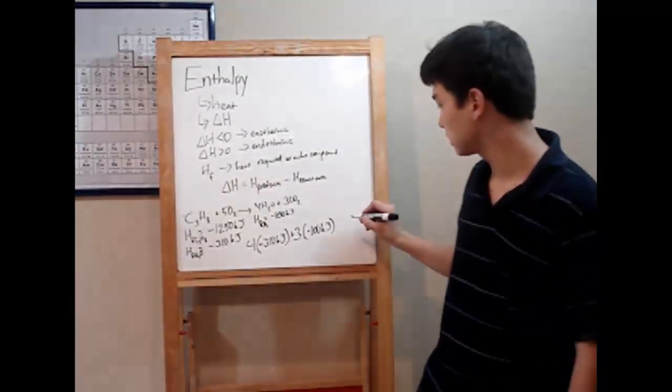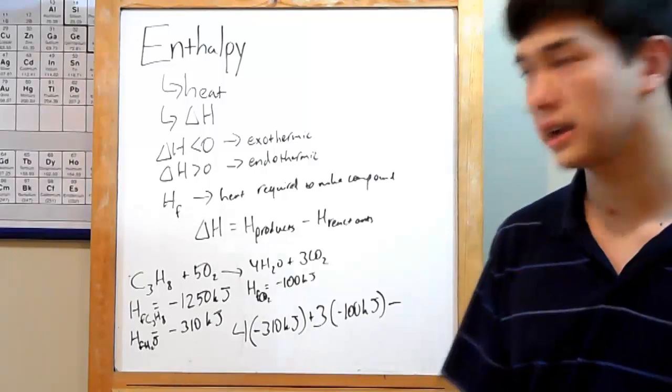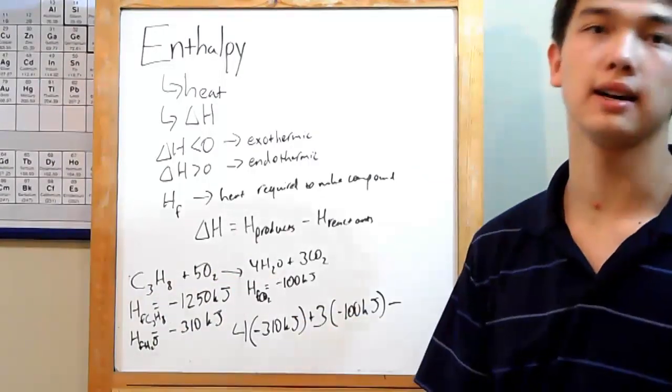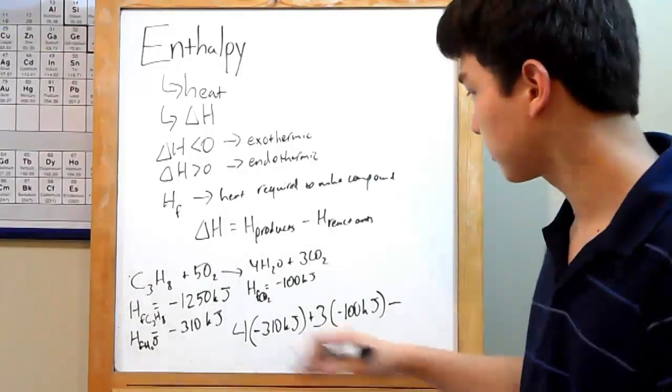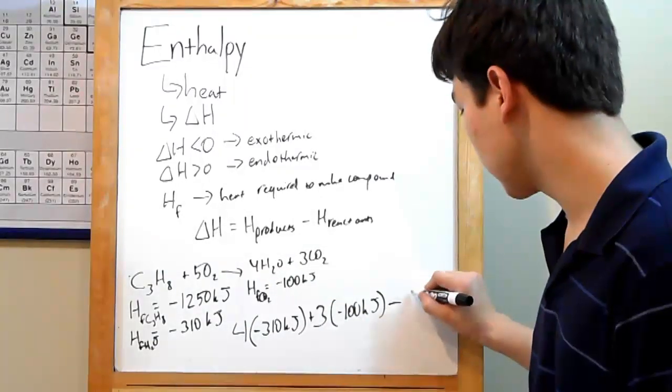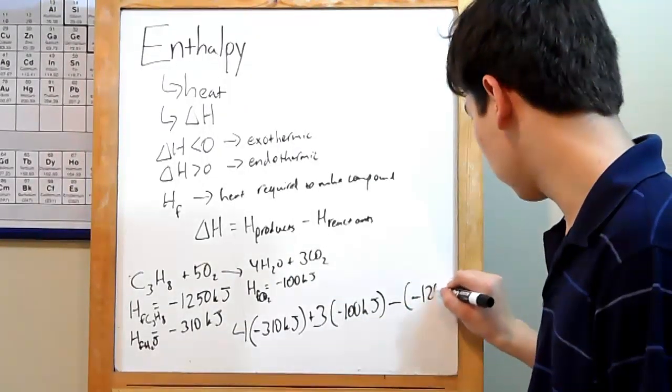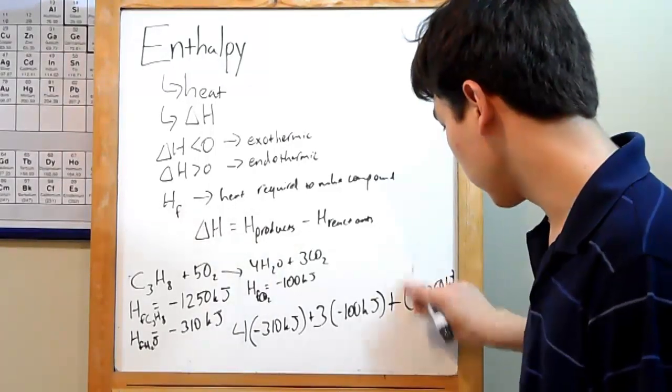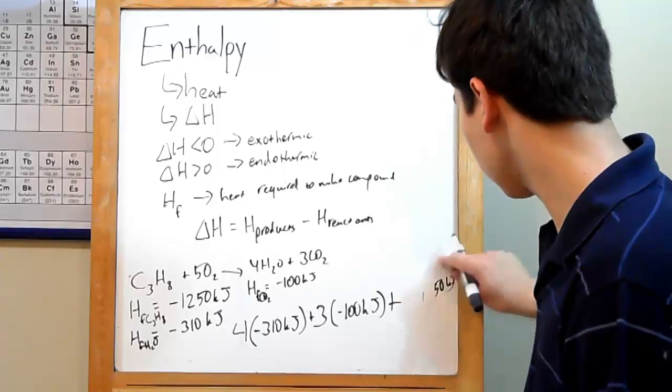Now we need to subtract the heat of formation for our reactants. That's C3H8 and oxygen. Again, oxygen has no HF. So we just put in C3H8. That's negative 1,250 kJ. So actually you could just write in a plus 1,250. The negative signs will cancel out.